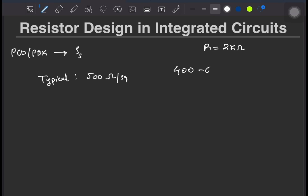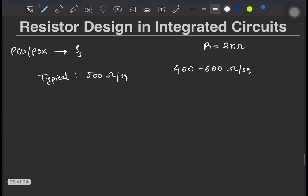For instance, the PDK might tell you that the resistance varies between 400 to 600 ohms per square with a nominal value of 500 ohm per square. Since you want a resistance of 2 kOhms, you know that the L by W ratio should be 4.